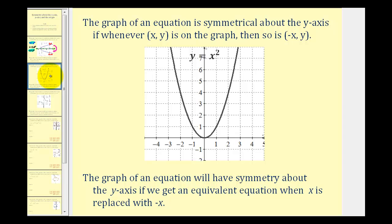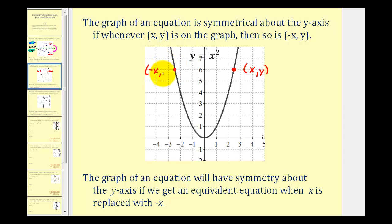Now let's talk about y-axis symmetry. The graph of an equation is symmetrical about the y-axis if whenever the point (x, y) is on the graph, then so is the point (negative x, y). For example, if we label this point here with coordinates (x, y), notice how this graph would also contain the point on the left with coordinates (negative x, y). This would be true for any two points on this graph because it does have y-axis symmetry.